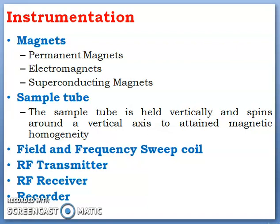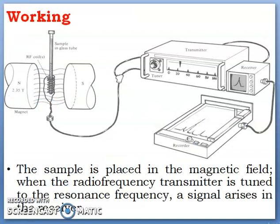In our next slide, let us see the working. This is the sample holder which is made of glass. This sample holder is completely spinning in a vertical axis to have a uniform exposure of magnetic field, and is surrounded by a radio frequency receiver and transmitter coil.